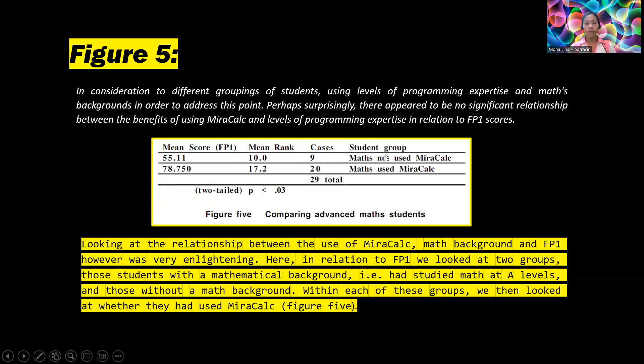For the student group, we have math not used MiraCalc and math used MiraCalc. For math not used MiraCalc, the mean score is 51.11, mean rank 10.0, and cases of 9. For math used MiraCalc, the mean score is 78.750, mean rank 17.2, and cases of 20, a total of 29 cases.